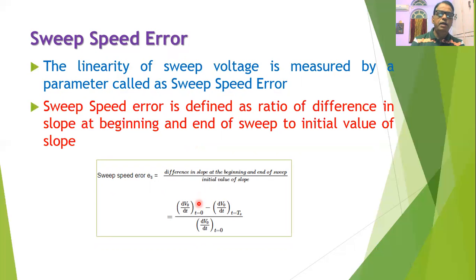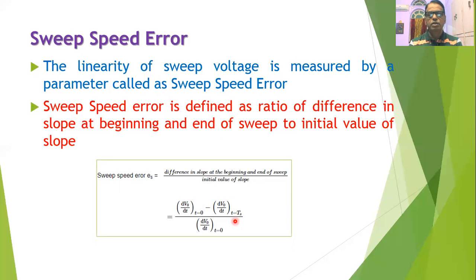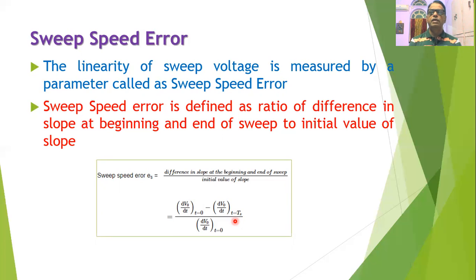Therefore we can write the formula for sweep speed error: ES = (dV₀/dt at T=0 minus dV₀/dt at T=TS) divided by (dV₀/dt at T=0). So dV₀/dt gives the change in voltage with respect to time — it is the slope at T=0 and at T=TS. We take the difference in the slope and divide by the initial value of the slope. The value of the sweep speed error must be as small as possible; if it is small then the linearity of the sweep voltage is much higher, and it is always expected that the linearity of the sweep voltage must be as high as possible.